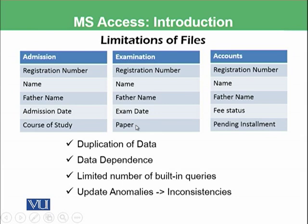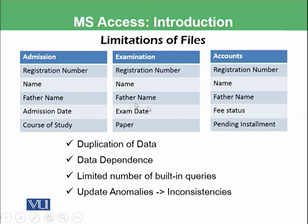Data would also be dependent. For example, if we try to update or add anything in admissions, the same changes need to be made in examination and accounts for the same student. If a student's name changes, it must be changed in admission, examination, and accounts. If you are unable to make the same changes across all files, the data becomes inconsistent. This is known as an update anomaly.